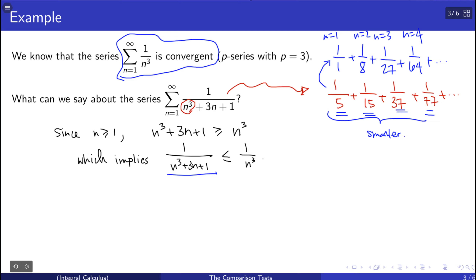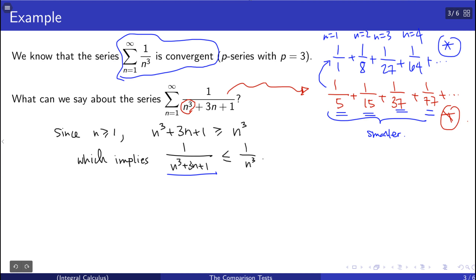If we keep adding all the terms of 1/n³ as n goes to infinity we get a finite number — that's the limit of that partial sum. Then the series 1/(n³ + 3n + 1) must also converge, because term by term it's smaller, and so its partial sums are going to be smaller than the corresponding partial sums for 1/n³.